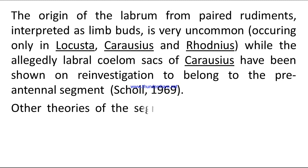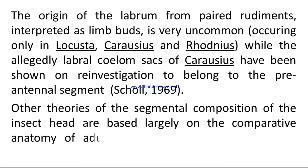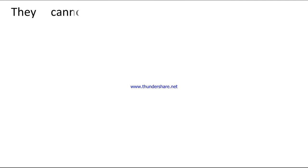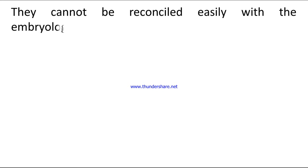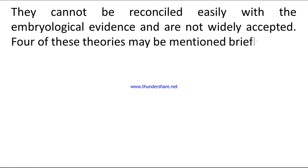Other theories of the segmental composition of the insect head are based largely on the comparative anatomy of adult forms, especially of the central nervous system. They cannot be reconciled easily with the embryological evidence and are not widely accepted. Four of these theories may be mentioned briefly.